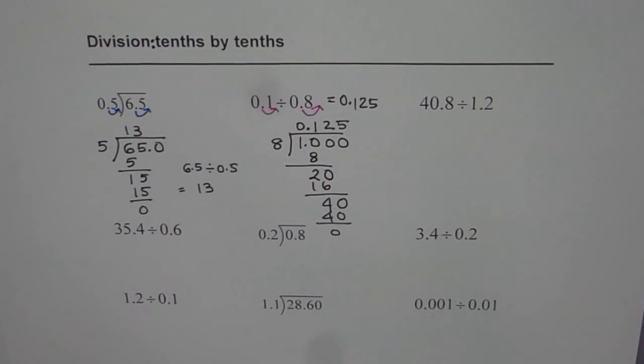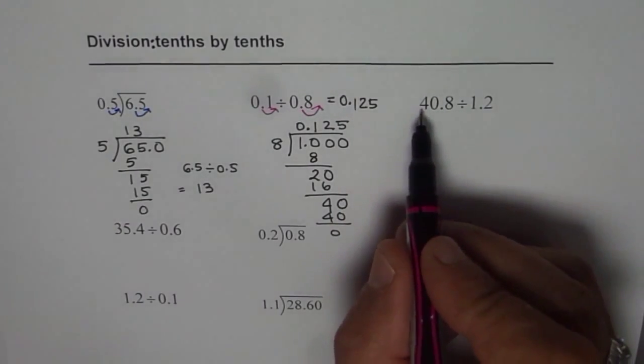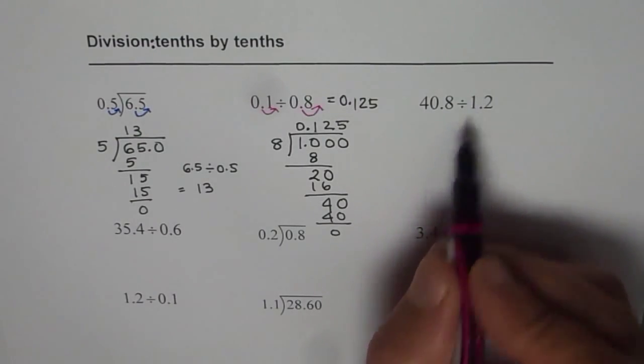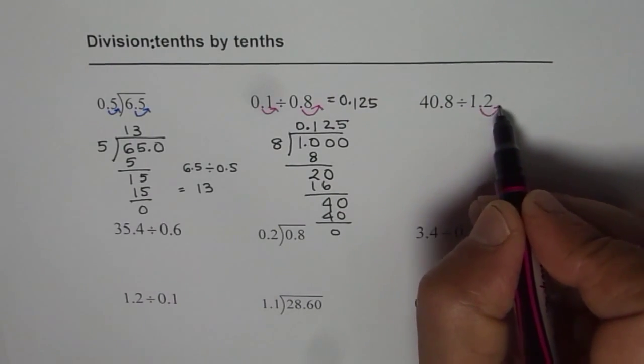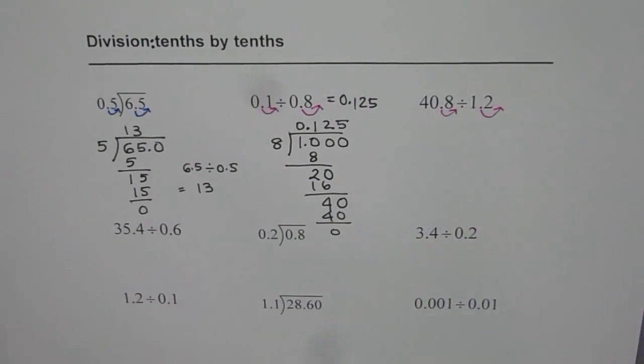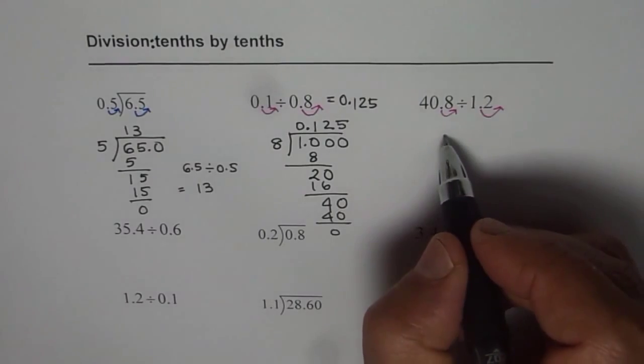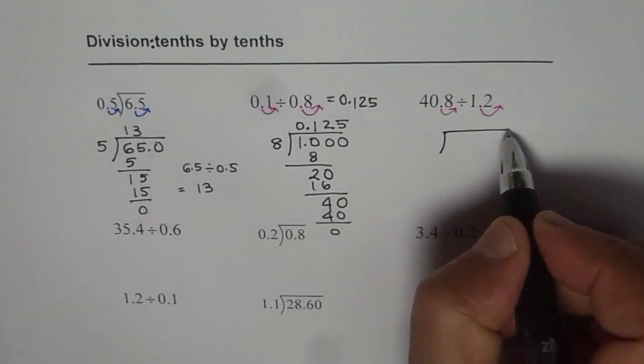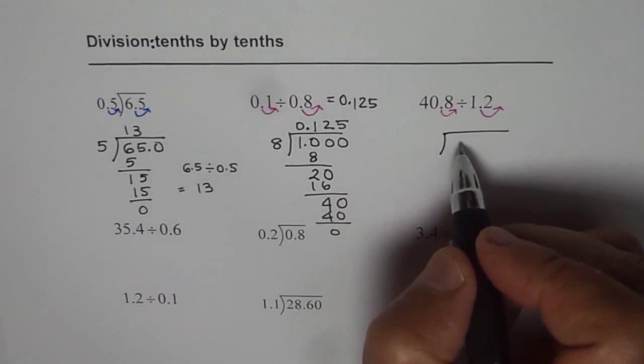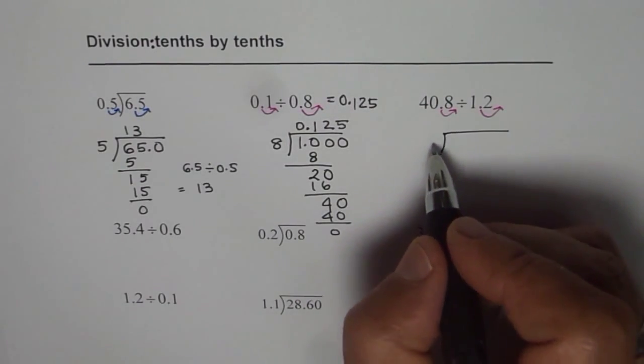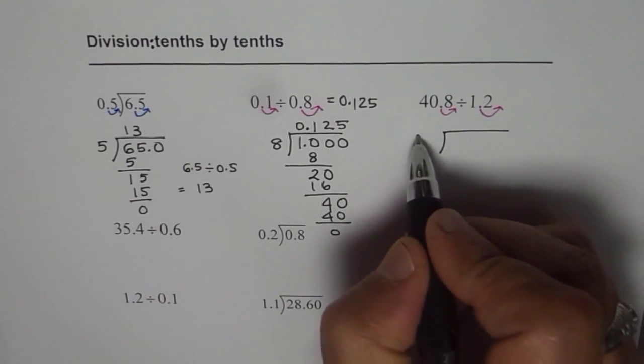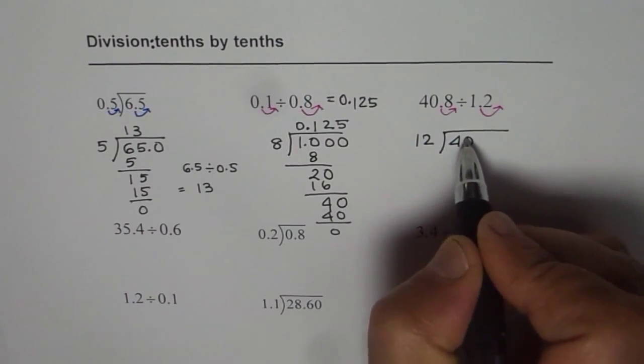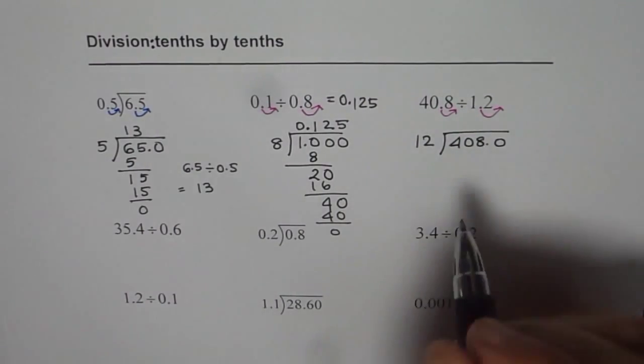Let's do one more. In this case, we are dividing 40.8 by 1.2. First step is make divisor a whole number. One decimal place. These are all tenths. So we are moving it one place to the right for both of them and then we are going to rewrite our division with divisor and dividend. Divisor is 1.2. After moving the decimal one place to the right, we get 12 and here we have 408.0.